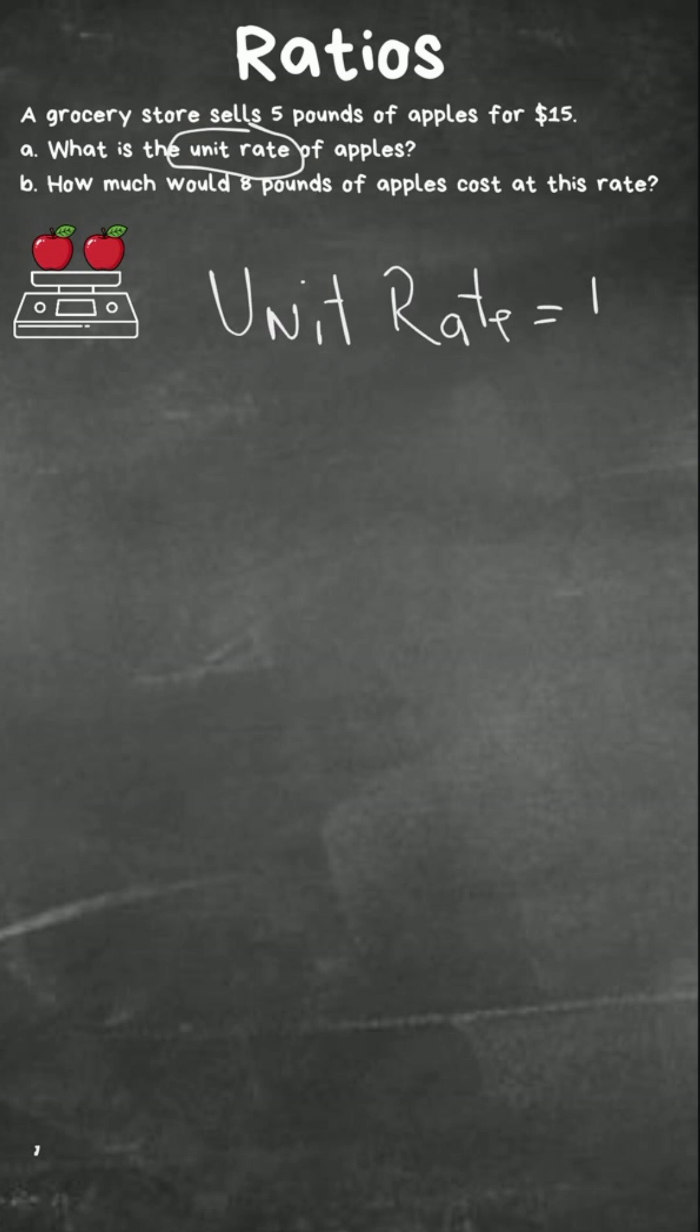So let's look at this example. A grocery store sells five pounds of apples for $15. What is the unit rate? Well, it's $15 for five.